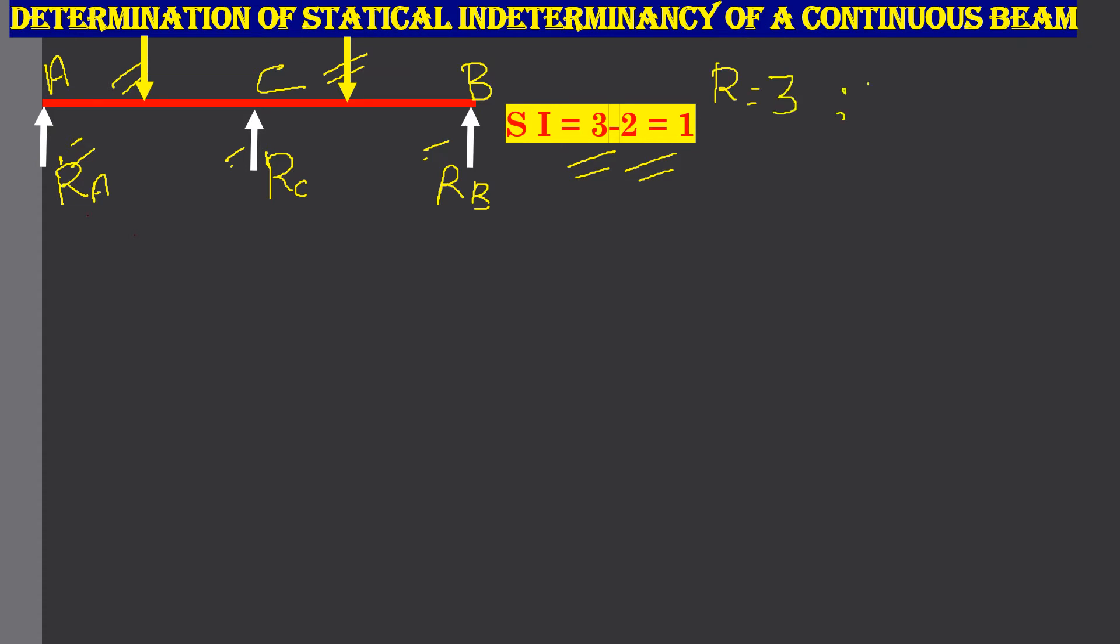Our equations of equilibrium are 2. That is, sigma V is equal to 0 and sigma M is equal to 0. That is, summation of all the vertical loads is equal to 0 and the summation of moments is equal to 0. So, our statical indeterminacy is 3 minus 2, we get 1. We will go for another example.